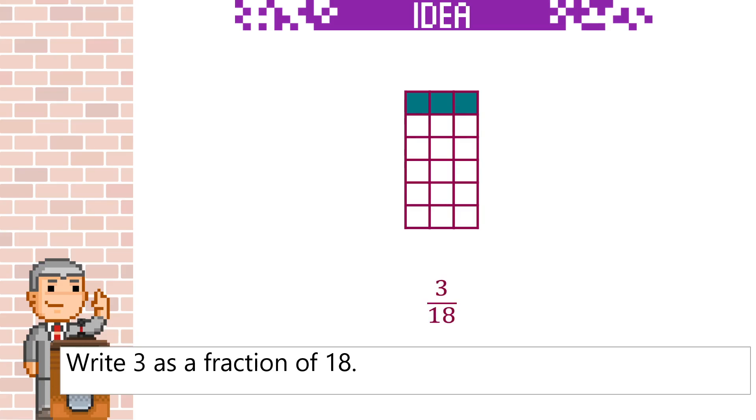We can split the 18 up into 3 groups of 6 squares. Each group has one square shaded. 3 over 18 will therefore be the same as 1 over 6. This is called simplifying.